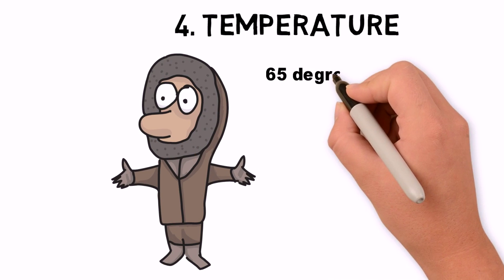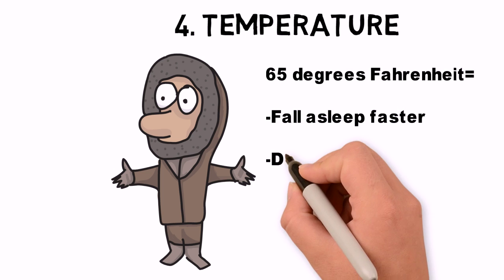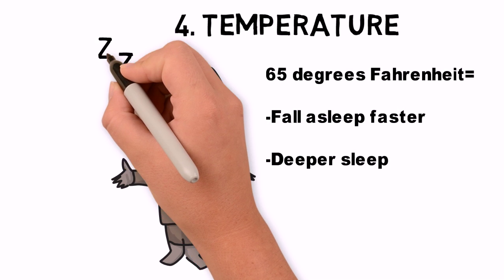helps tell our bodies that it's nighttime. Several independent studies have found 65 degrees Fahrenheit to be the ideal temperature for deep, continuous sleep.